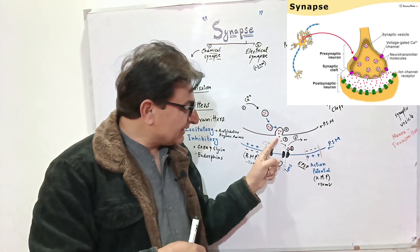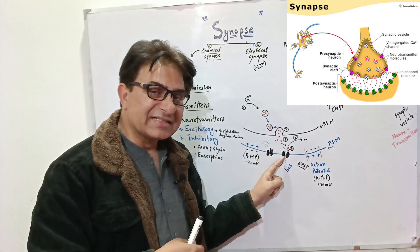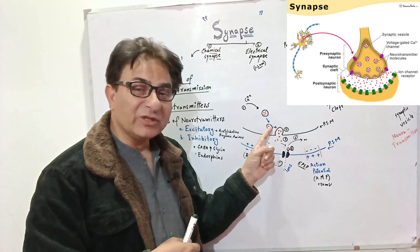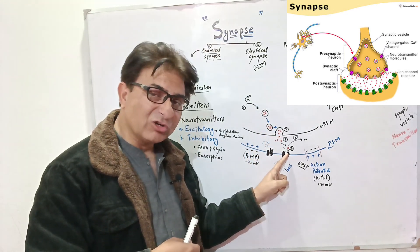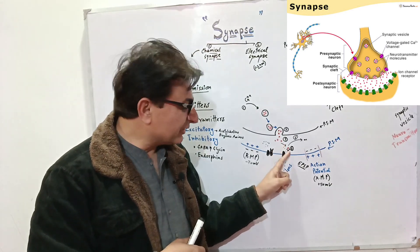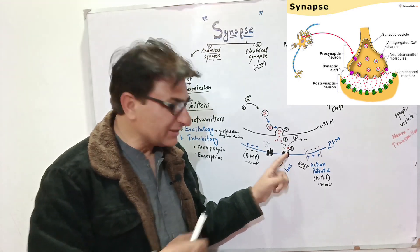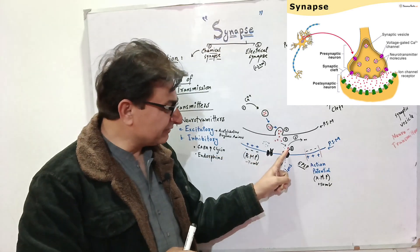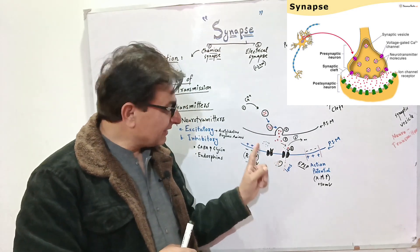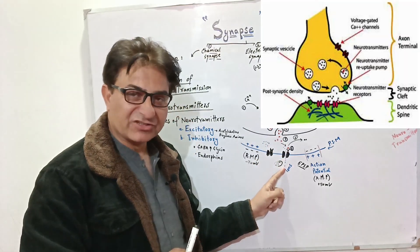The neurotransmitters released into the synaptic cleft attach to receptors on the post-synaptic membrane. For example, if the neurotransmitter is acetylcholine, the receptors are cholinergic receptors. These cholinergic receptors bind with the acetylcholine molecules. Once acetylcholine binds with these receptors, it increases the permeability of the post-synaptic membrane, allowing sodium ions to start entering into the next neuron.